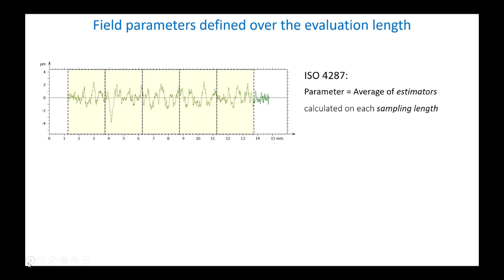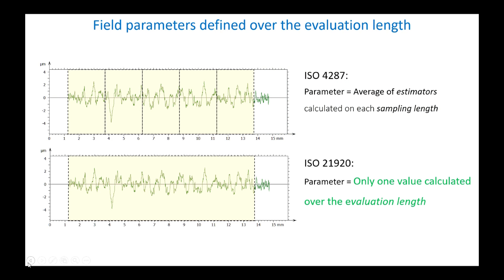Another important modification concerns the elimination of sampling lengths, which impose the calculation of most parameters piece by piece and the calculation of an average value. For the sake of simplification and to reflect progress in the stability of profilometers, there is now no more averaging, and the parameters are defined and calculated directly on the evaluation length.